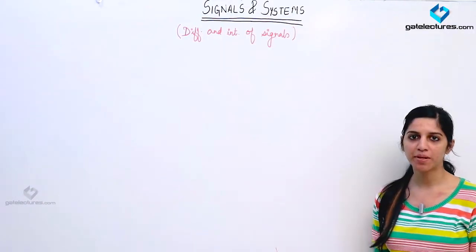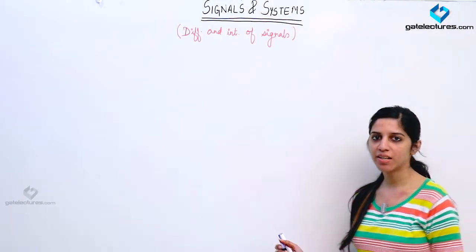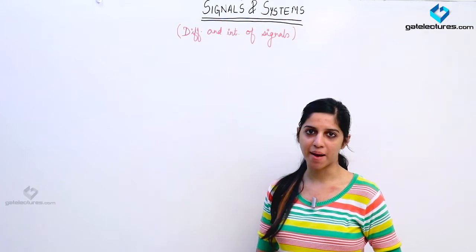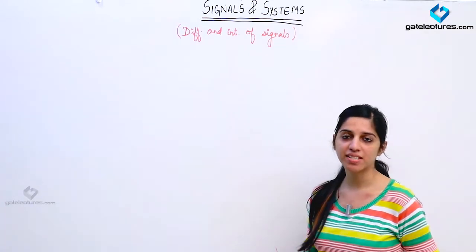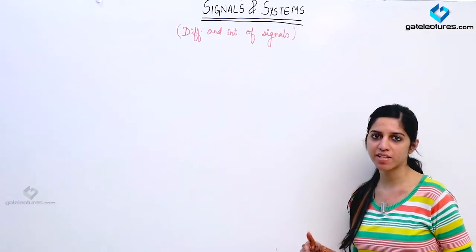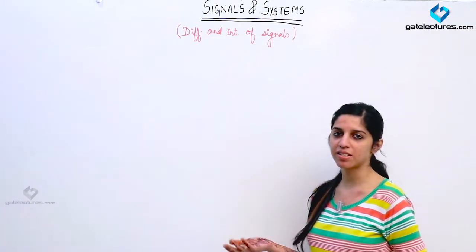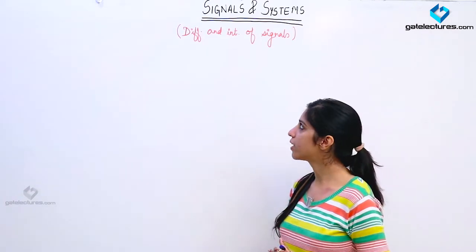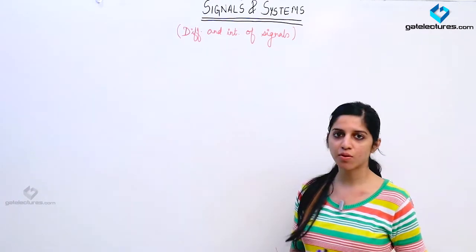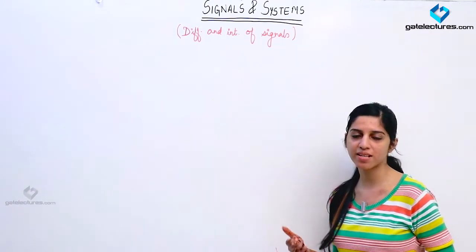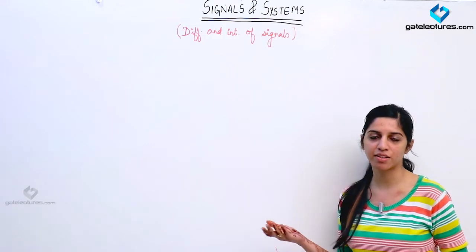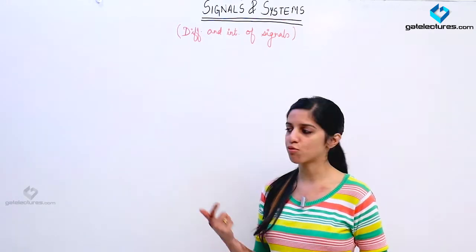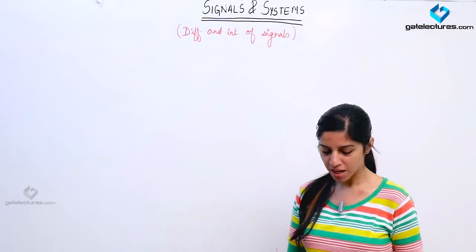Hello people. We already looked at some basic signals — unit impulse, step and ramp — and we have discussed that all these signals can be expressed as differentials and integrals of each other. In today's lecture we are going to look at how we can express them as differentials or integrals of each other, and also how to solve some questions related to them.